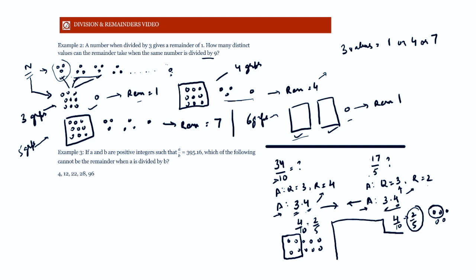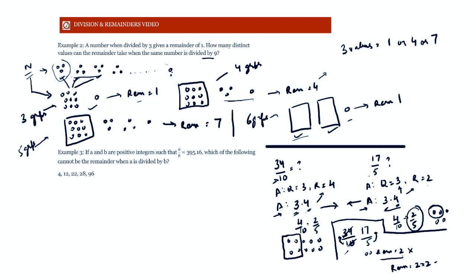Be careful: if you need the remainder when 34 is divided by 10, you cannot simplify it to 17 divided by 5 and use remainder 2. When you divide both numbers by 2 — turning 10 into 5 — you must multiply the remainder back by 2. The remainder when dividing by 5 is 2, but the actual remainder when 34 is divided by 10 is 2 × 2 = 4.